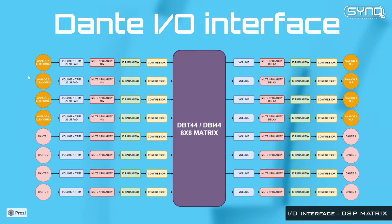We have the pad. We have mute and polarity, which is quite handy — it's separate for each channel. We have 10 parametric EQs, and a compressor/limiter including a soft knee. Everything goes into a matrix, so for each output you get a separate mixer with 8 inputs. On the output side, on the right-hand side of the presentation, you will see we can control the volume, mute, and polarity.